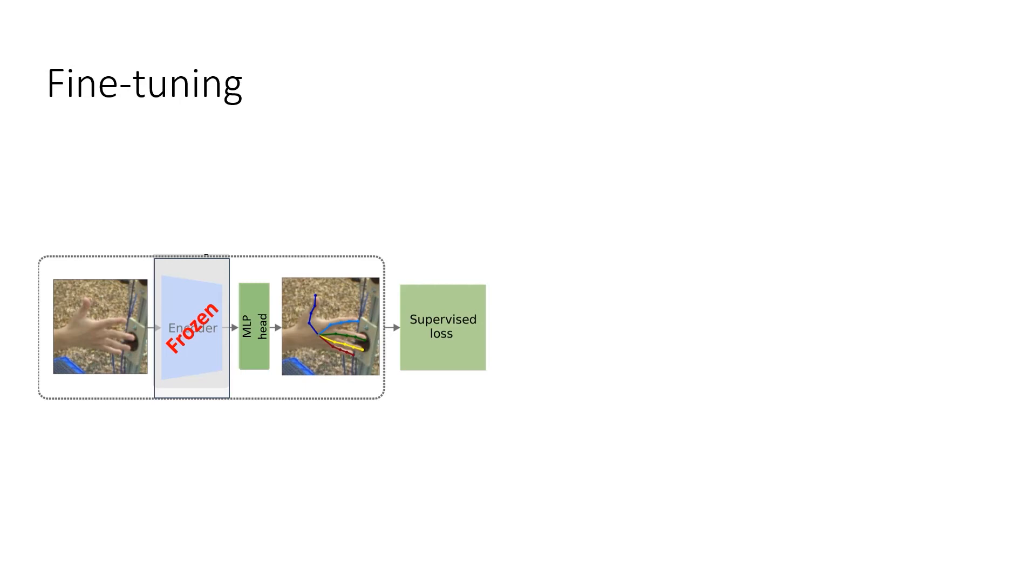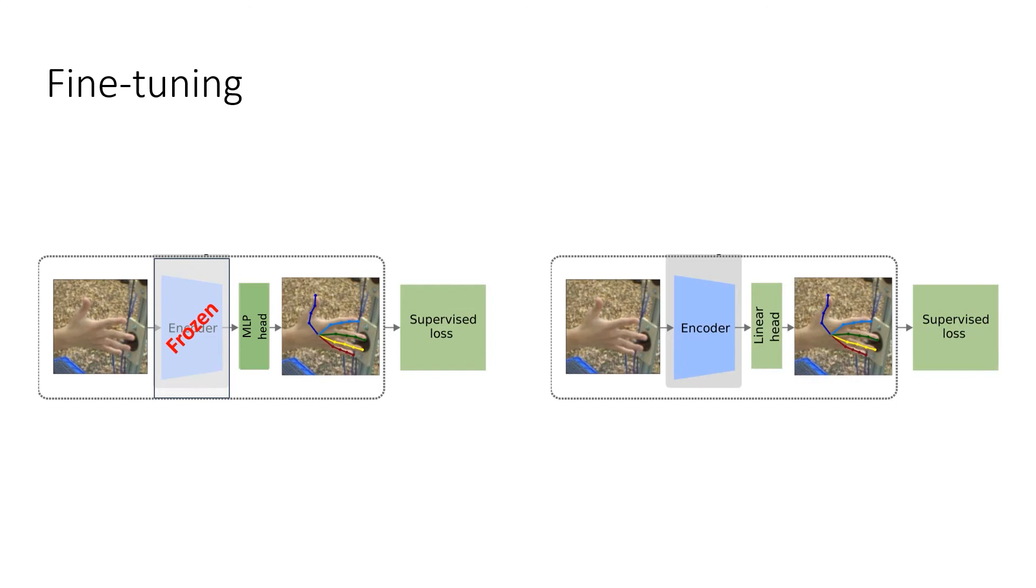In the first, we freeze the encoder and train an MLP on labeled data using the encoder's feature representation. This is done to evaluate transformations and to derive the best-performing set of augmentations for pre-training for hand pose. In the second fine-tuning variant, we fine-tune the entire model on labeled data. This is done to assess the final performance of the model.